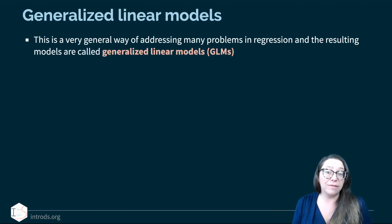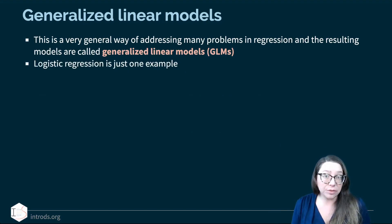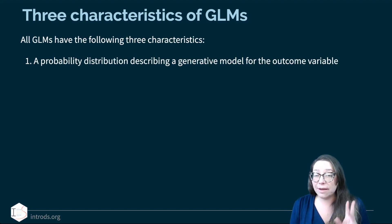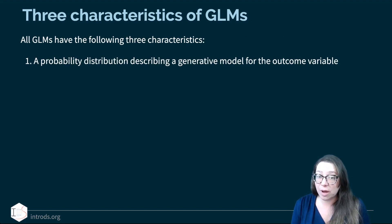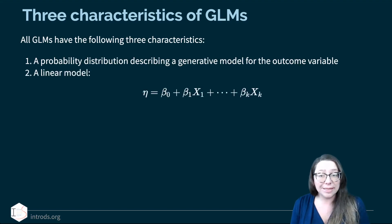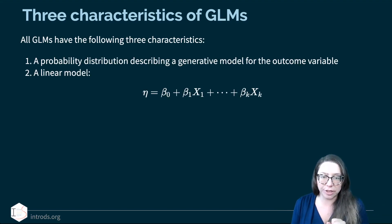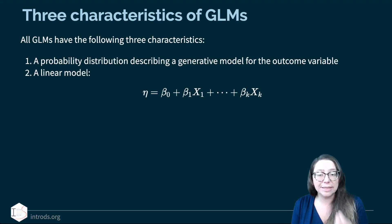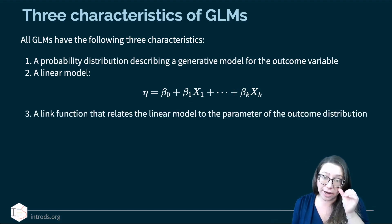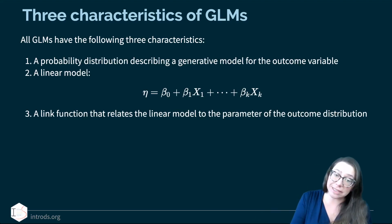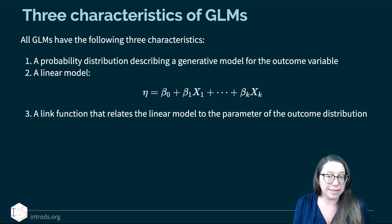We can't just use a linear model for p_i because p_i needs to be between zero and one — it's a probability. We can transform our linear model to have the appropriate range. This is a very general way of addressing many problems in regression, and the resulting models are referred to as generalized linear models. Logistic regression, for predicting binary outcomes, is simply one of them. These generalized linear models have three characteristics: a probability distribution describing the outcome, a linear model written as eta equal to intercept plus slope times each predictor, and a link function that relates the linear model to the parameter of the outcome distribution.